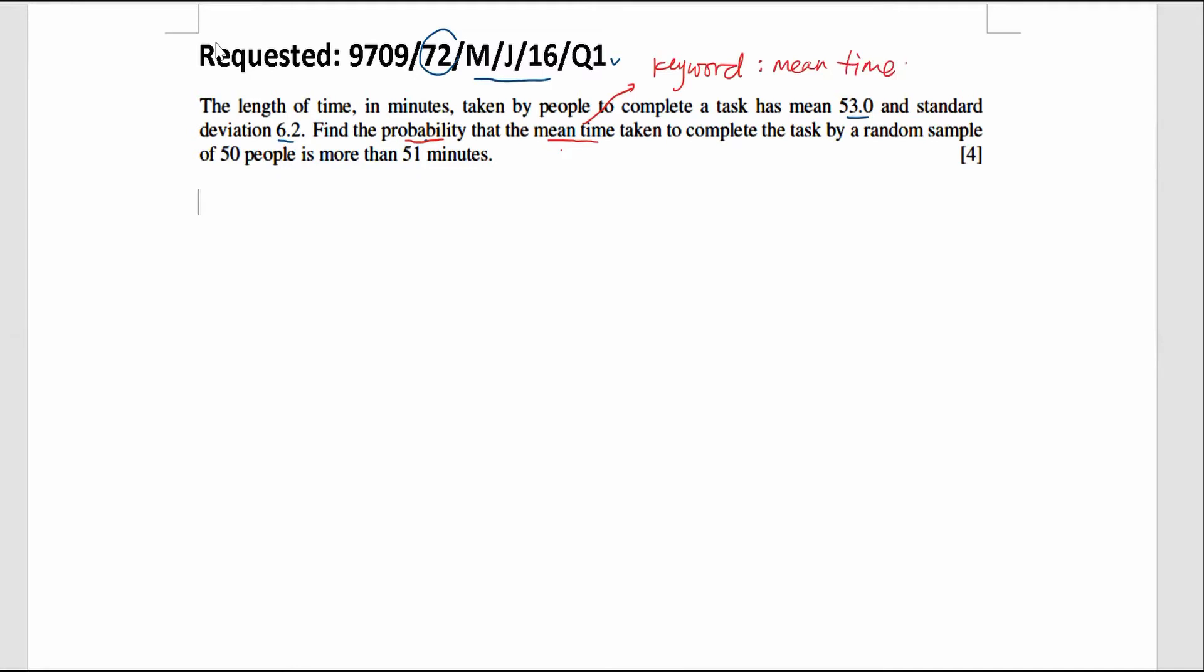So that means we are looking at the X-bar distributions. And X-bar distributions follows normal distribution where the mean is given by mu and the variance is given by sigma square, but don't forget, divided by the random sample size.